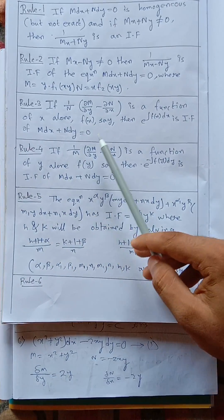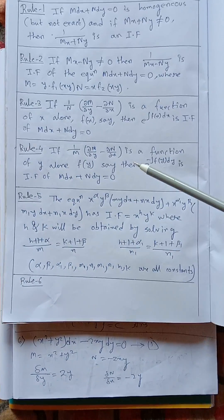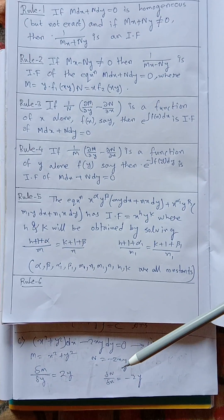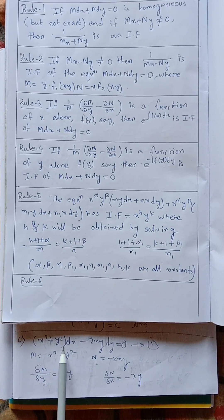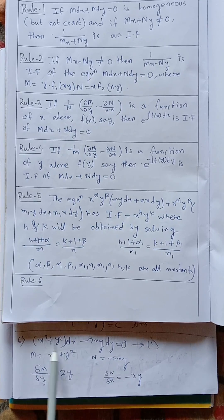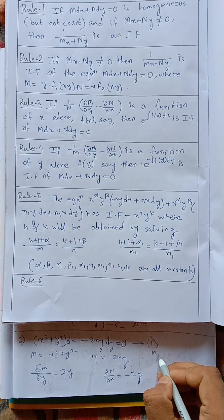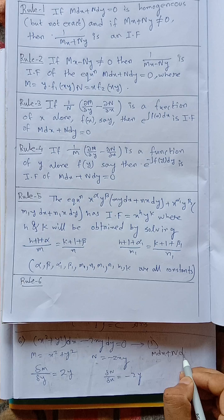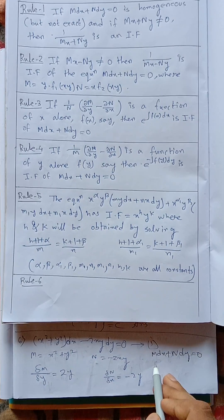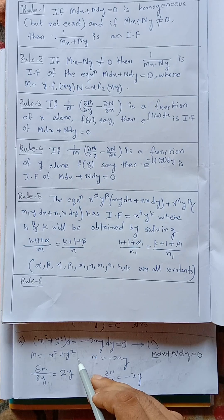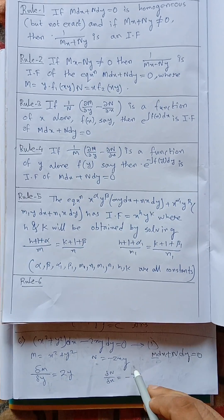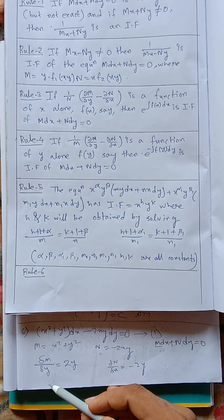Rule 3 or 4 is applicable for this equation. First we have to compare this equation with m dx plus n dy equals to 0. After comparing, m equals x square plus y square and n equals minus 2xy.